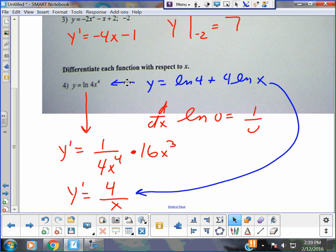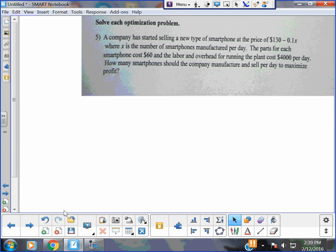The next problem is an optimization. I think what I'll do today is, you guys want to follow along, I'll just give you a chance to see a problem. A company has started selling a new type of smartphone at the price of $130 minus 0.1x, where x is the number of smartphones manufactured per day. Each phone costs $60 for parts, and it doesn't matter how many phones they make a day, it costs $4000 to run the plant. So if they make one phone, it's $4000, if they make 4000 phones, it's $4000. How many smartphones should the company manufacture and sell to maximize profits?